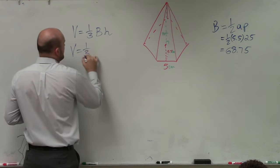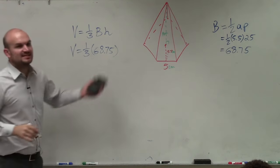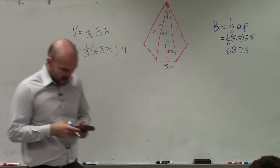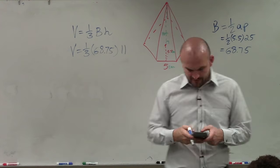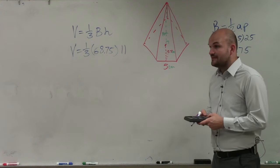But volume equals 1/3, 68.75. And we see that the height is 11. So now I plug in my calculator, 1 divided by 3, which is 1/3, times 68.75 times 11.